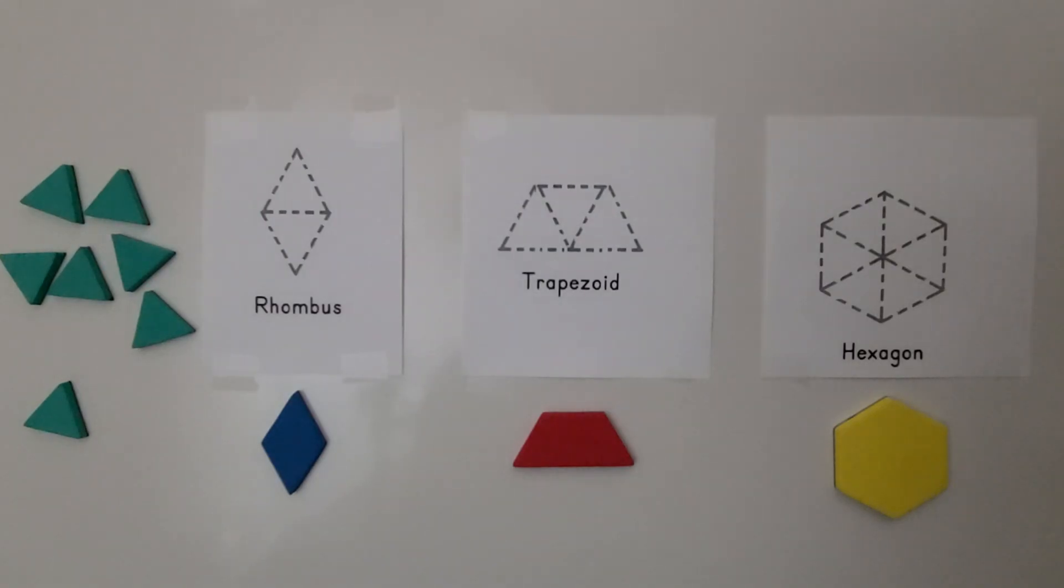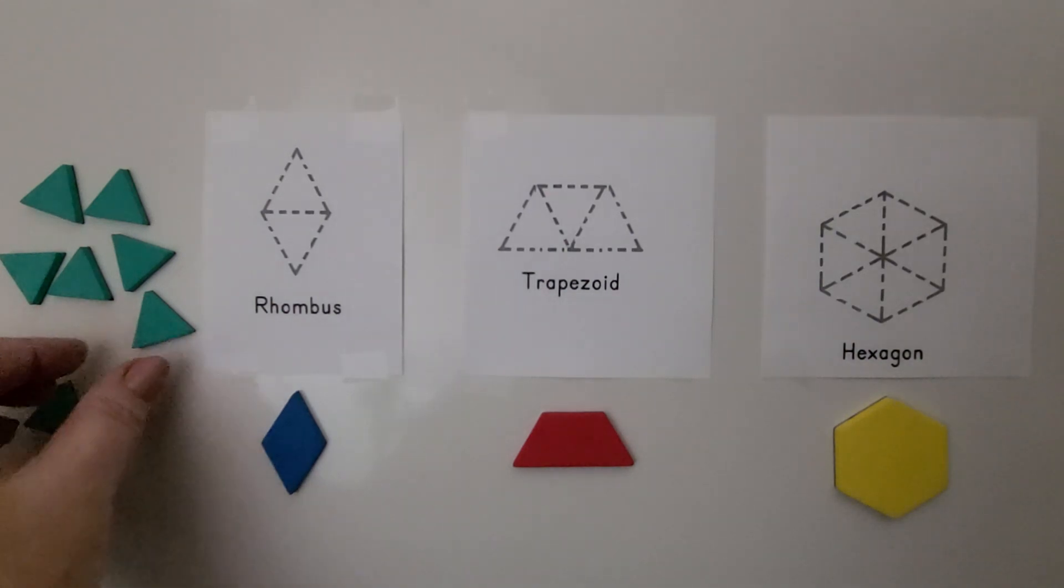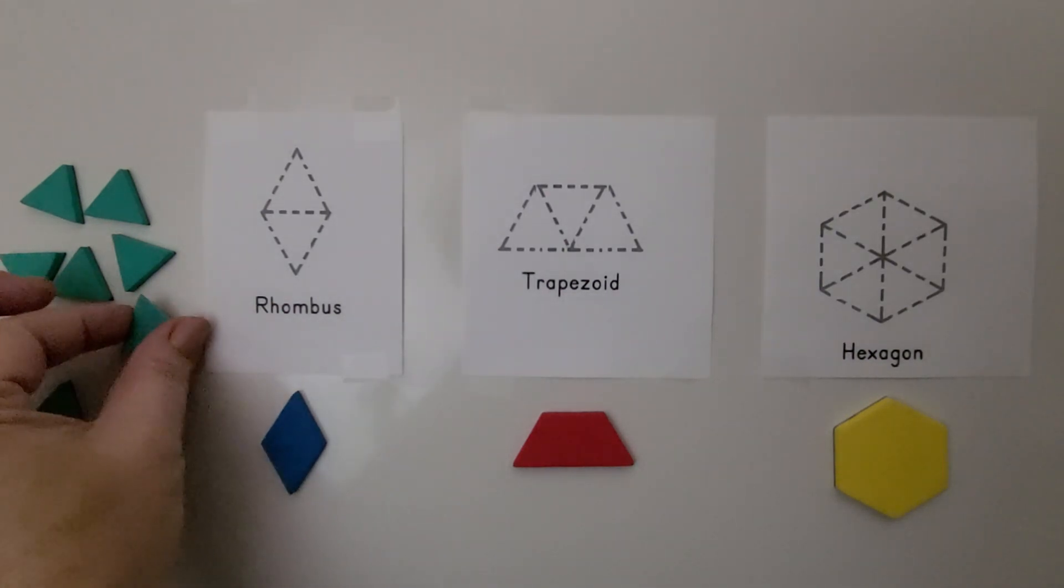We can use several triangles that are the same size and shape to create new shapes. If we use two triangles, we can make a rhombus.